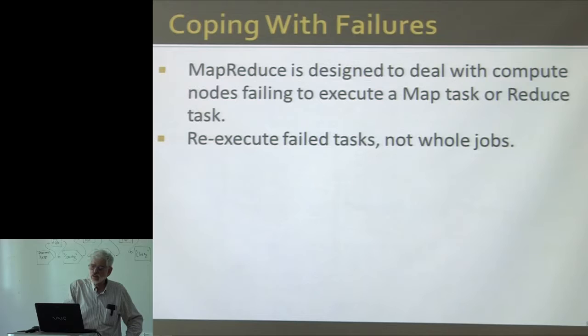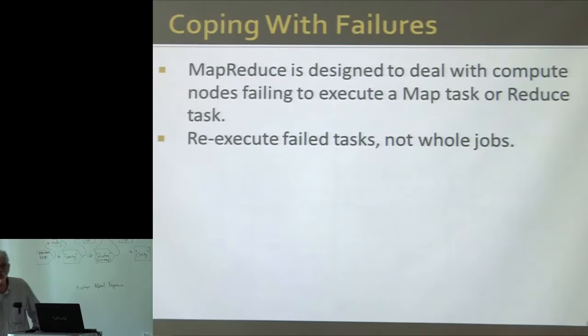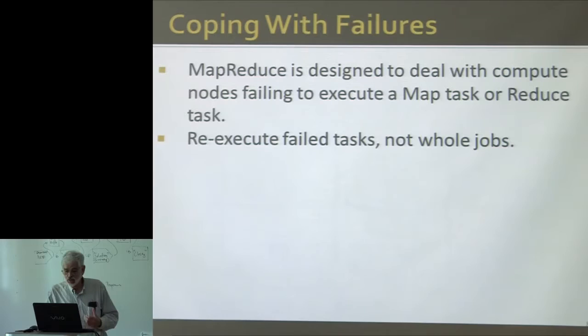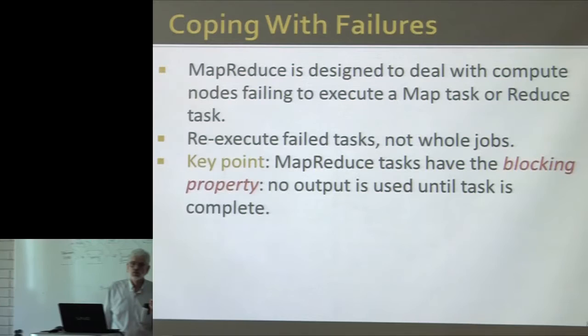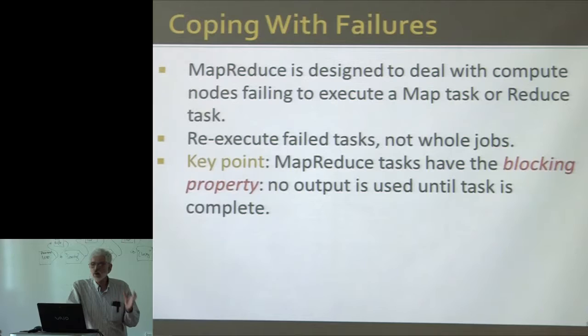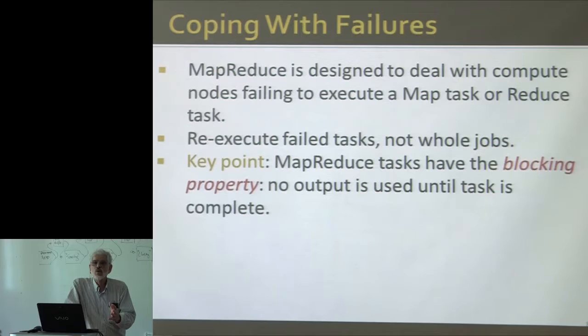There's a property of MapReduce and other systems like Spark or Flink called the blocking property: you can't use the output of a task until the task is complete. This is the key property that all these useful systems have — if a task fails before it's finished, you don't have to worry about whether somebody has consumed part of its output. It's the thing that lets you restart a task rather than restart an entire job.